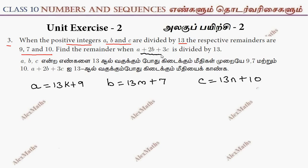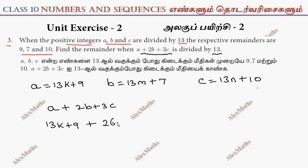Find the remainder when A plus 2B plus 3C is divided by 13. Expanding: A is 13k plus 9, plus 2B is 26m plus 14, plus 3C is 39n plus 30.